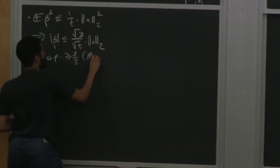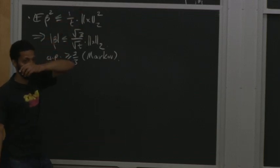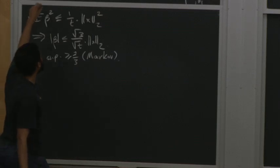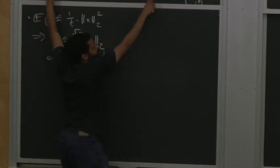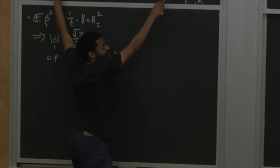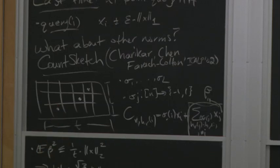So if you want epsilon times the L2 norm error, you should set t = 1/epsilon^2. You take the counter that i hashed to, multiply by sigma_r(i) to cancel the sign, giving x_i plus a small error term, and take the median over all estimates.